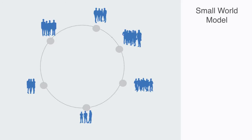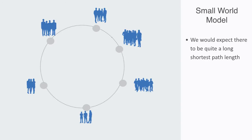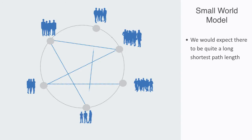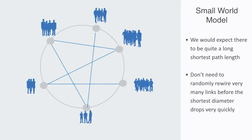If we had quite a large network with high clustering, we would expect quite a long shortest path length, but that is not the case here. Watts and Strogatz came up with a model that captured this phenomena. It involved starting with a ring lattice where all nodes are only locally connected and thus have a high clustering coefficient, but then randomly picking some links to rewire so they would connect not to their local cluster, but somewhere else in the network. They found that you didn't need to randomly rewire very many links before the shortest diameter started dropping very quickly, and from this they were able to capture the small world phenomena.